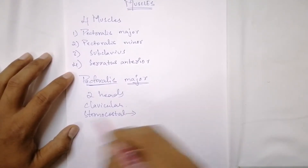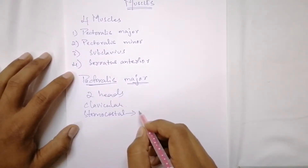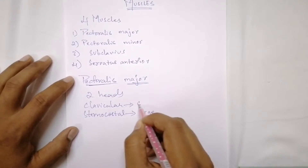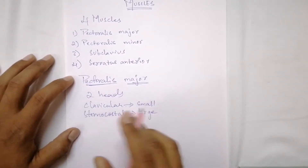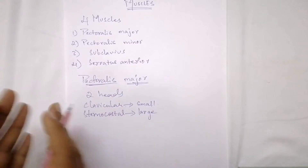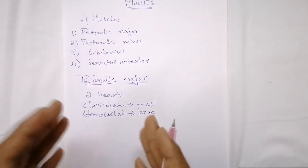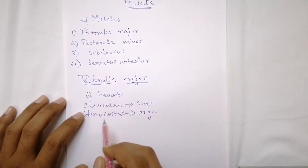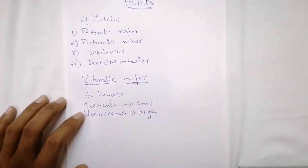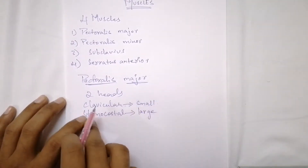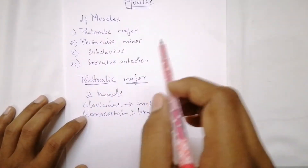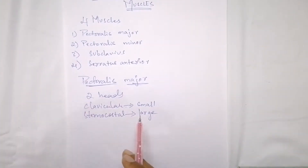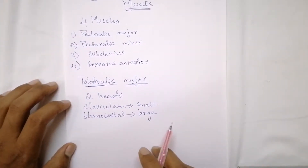The sternocostal head is the larger of the two, much larger compared to the clavicular head, which is smaller. The clavicular head arises from the medial two-thirds of the anterior surface of the clavicle, while the sternocostal head arises from the upper six costal cartilages of the ribs and the aponeurosis of the external oblique muscles.